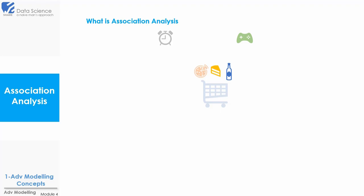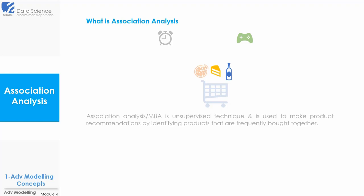We have all seen such recommendations on Amazon when we buy any product, or even Netflix recommends movies based on our preferences. So all this is possible using association analysis. Association analysis, or market basket analysis, is an unsupervised machine learning technique used to make product recommendations by identifying products that are frequently bought together.